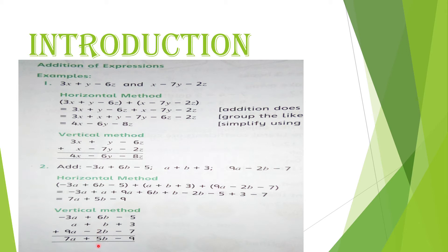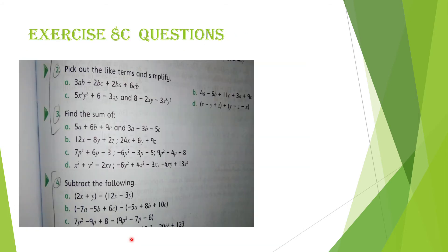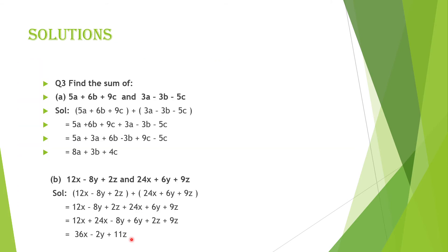Constant terms mein: minus 7 aur minus 5 — dono negative hain, 5 aur 7 milake 12. Is positive term ko 12 mein se nikaalen — 12 mein se plus 3 nikaalen — answer minus 9. Ab exercise par aaen.